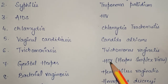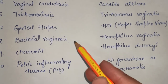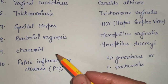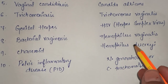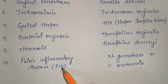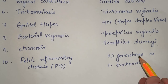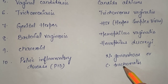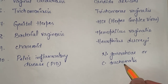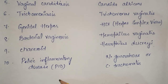Bacterial vaginosis is caused by Haemophilus vaginalis. Chancroid is caused by Haemophilus ducreyi. Pelvic inflammatory disease — that is PID — is caused by Neisseria gonorrhoeae or Chlamydia trachomatis. So these are the main STDs with their causative agents. Thanks for watching.